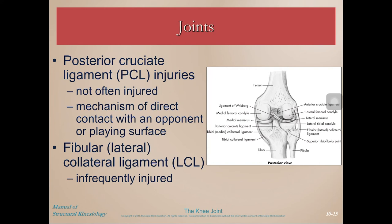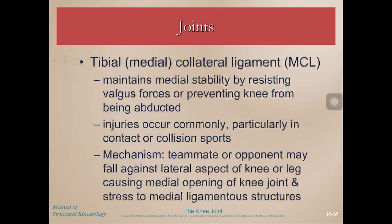The posterior cruciate ligament, or PCL, is not as often injured unless there's some sort of direct contact. You can see it running from posterior through the knee up into the anterior part as it moves superiorly. The fibular collateral ligament, or lateral collateral ligament, is also infrequently injured. The MCL, or tibial collateral ligament, is commonly injured along with the ACL, maintaining medial stability by resisting valgus forces.